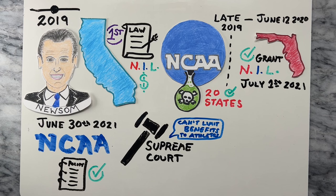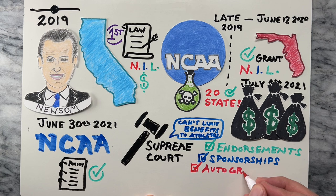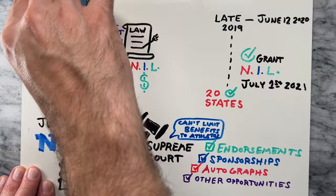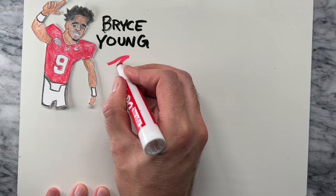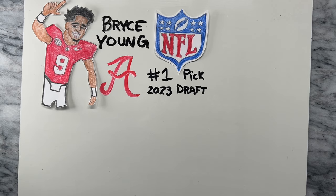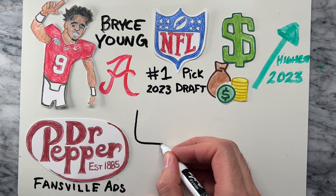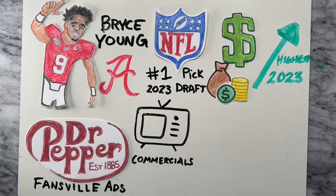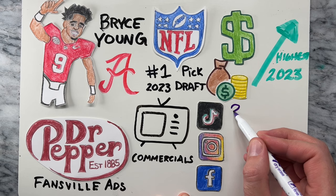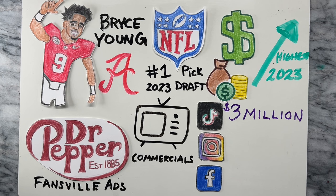These changes allowed athletes to earn money through endorsement deals, sponsorships, autographs, and other promotional opportunities. An example of an athlete who took advantage of NIL opportunities is Bryce Young, a former quarterback at the University of Alabama and the 2023 number one overall pick in the NFL draft. Young is considered one of the highest NIL earners of all time as of 2023. One of his most notable deals was with Dr. Pepper and their Fansville ad campaign. Young appeared in multiple commercials on national television for Dr. Pepper and promoted their brand on social media as well. According to On3, Young's NIL annual valuation was over $3 million.